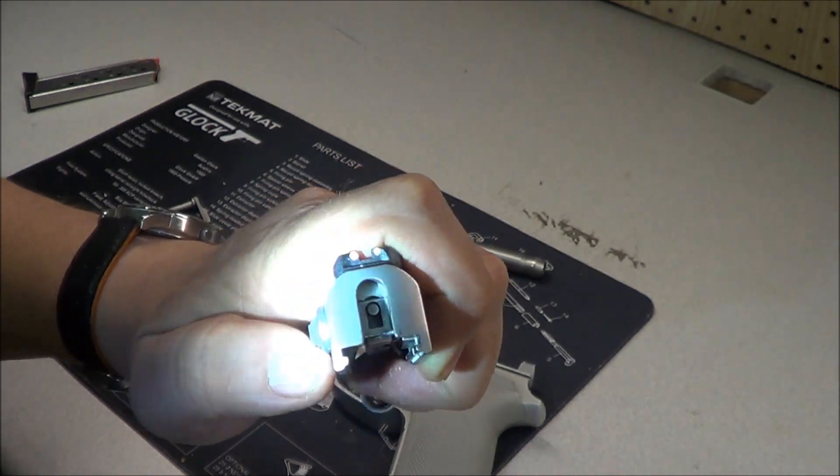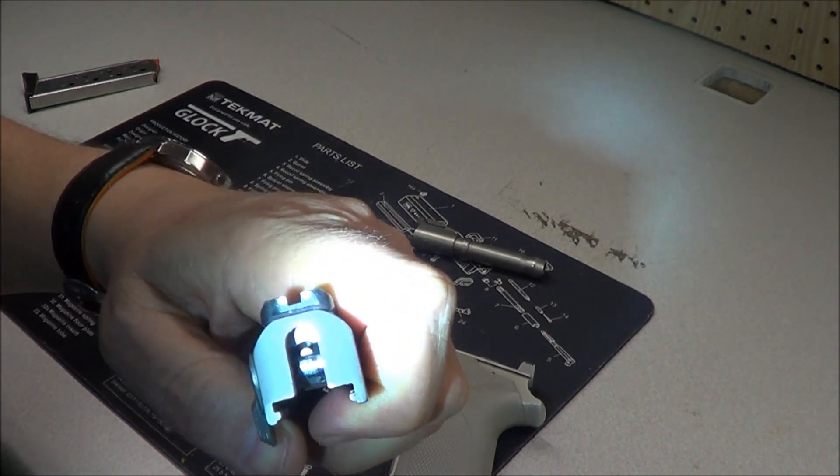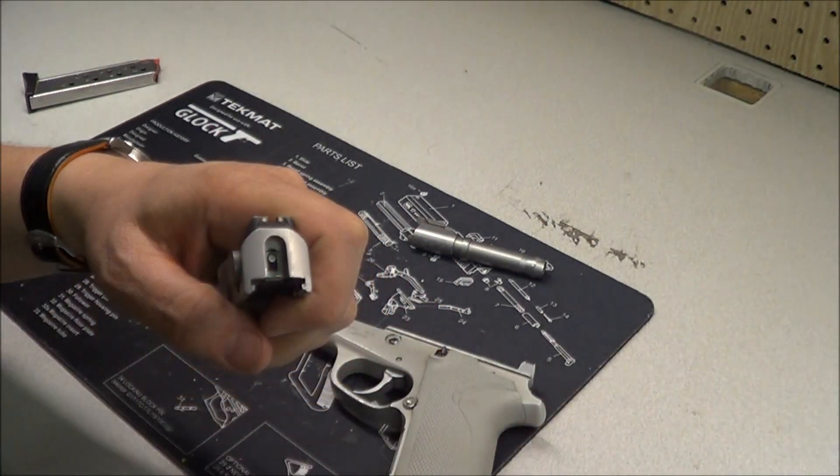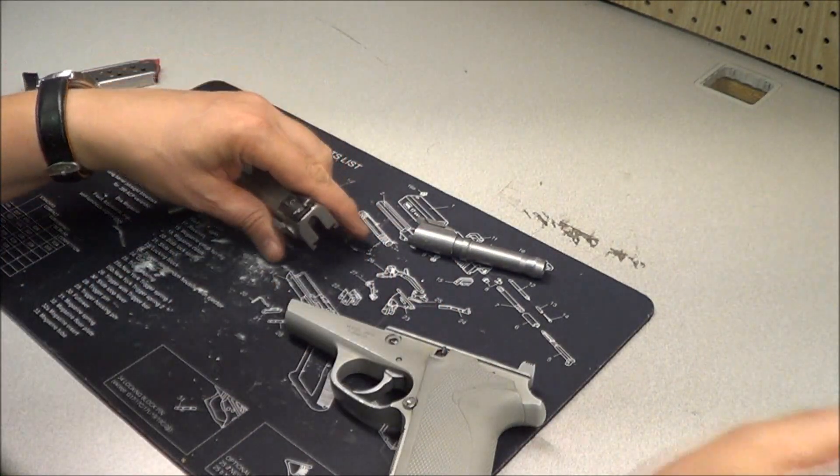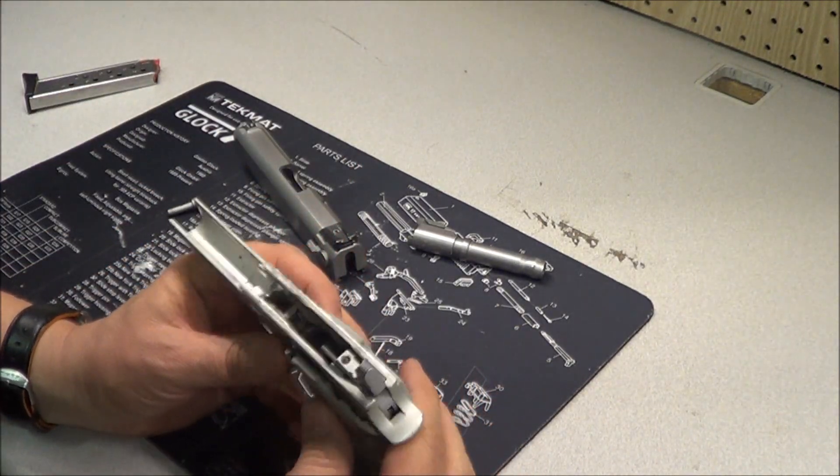When you roll that off, it exposes the firing pin. So that's the safety. When you go to put it back together, it's pretty simple. You just reverse the process.